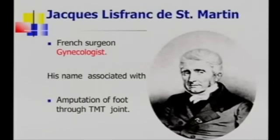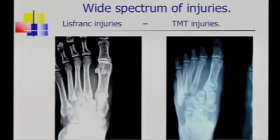Now if you look at the man, he has not described this injury. He was responsible for the fastest amputation in a soldier through this particular level. So it is called Lisfranc but he did not describe the injury. Now the spectrum of injury is vast — from such subtle injury to such frank dislocation. All these injuries are called Lisfranc injuries.